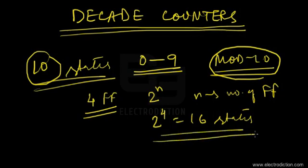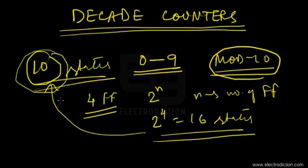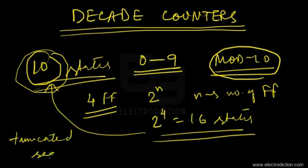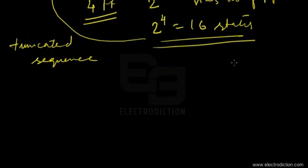We are going to limit the counting states of this counter to 10 states only. Since we're limiting the number of states the counter passes through, such counters are referred to as having a truncated counting sequence. With that in mind, there are two types of decade counters depending on their clocking technique.